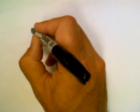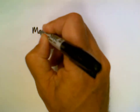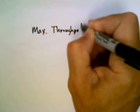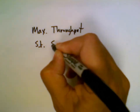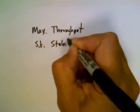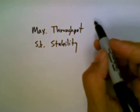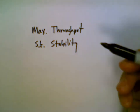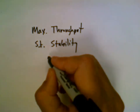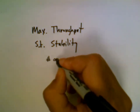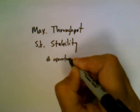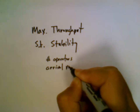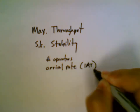In the optimization context, what I'd like to be able to do is to maximize my throughput subject to stability constraints. I want to have the maximum possible throughput such that my system is stable. The two things that I can adjust, at least in our simulation model, to control this are the number of operators and the arrival rate, or the inter-arrival time.